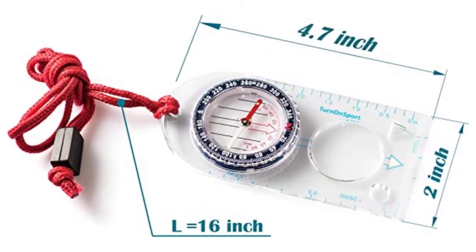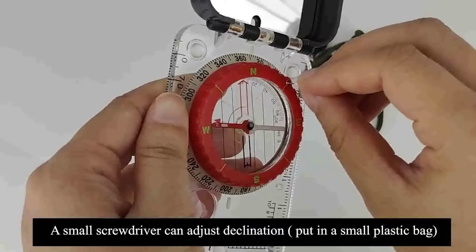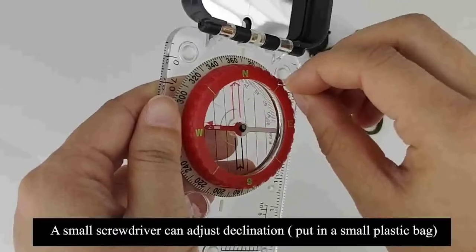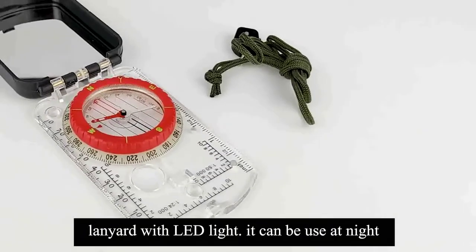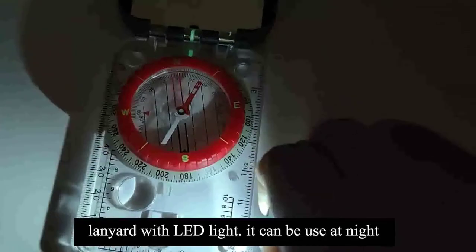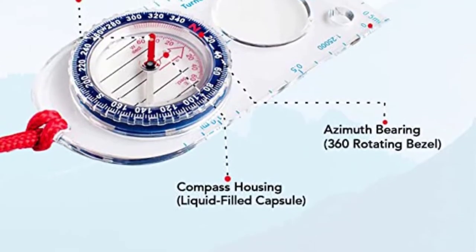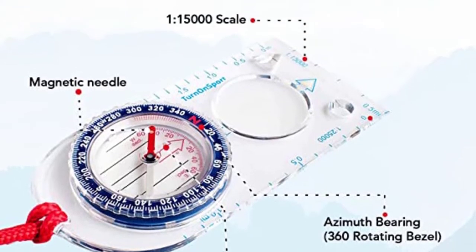In addition, it has a magnetic needle that swings quickly and a bezel that can rotate around 360 degrees. The capsule is bubble-free and filled with compass-safe oil, making it possible for the needle to move about uninhibitedly. In addition, this globe compass has a ruler calibrated in inches and a magnifying glass.